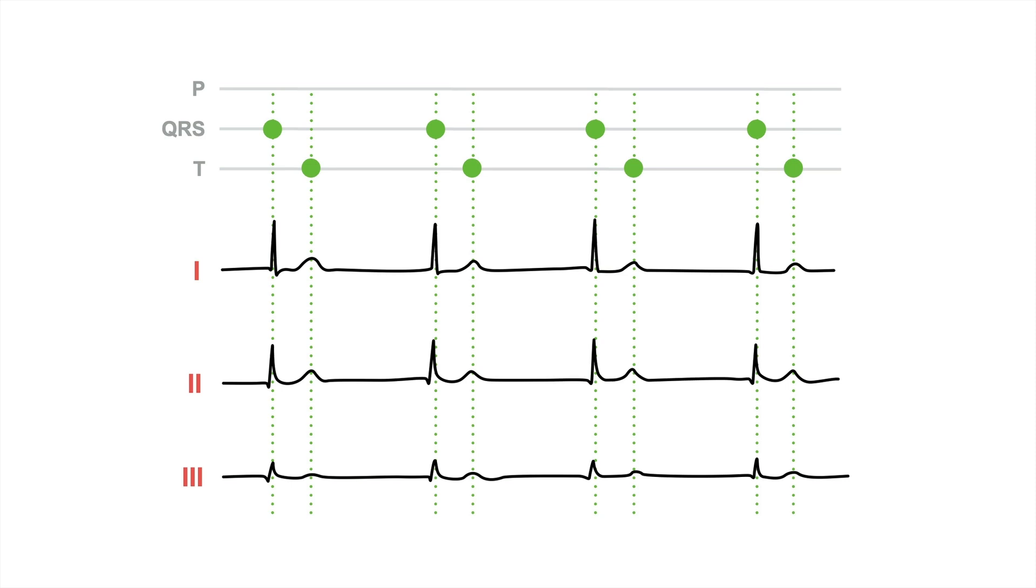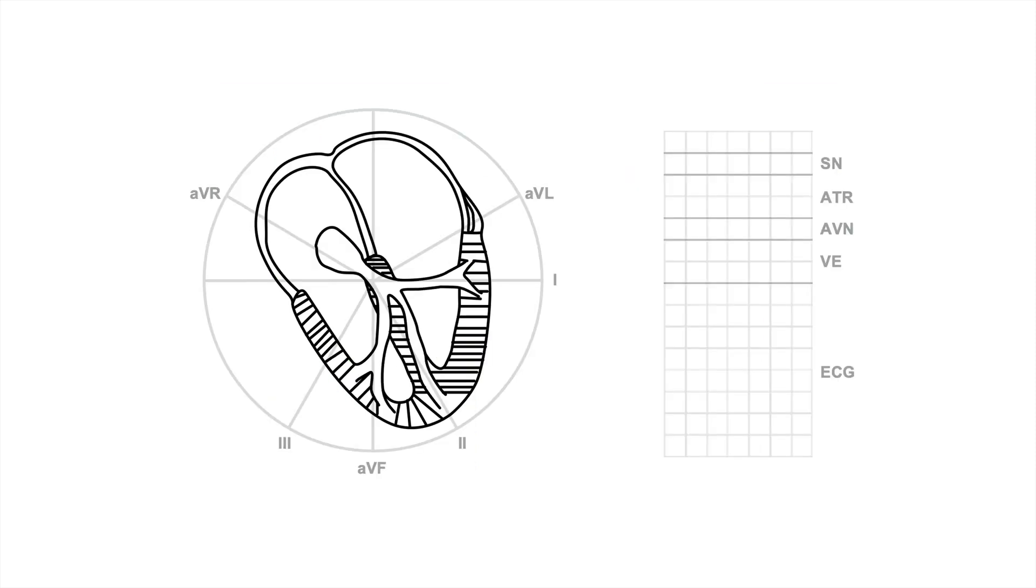This is just another form of a junctional rhythm. Let's have a look at the ladder diagram. Similar to the previous case, the impulse is generated in the AV junction and then travels up to the atria and down to the ventricles simultaneously. Let's check it out. So this is what happens. Since the atria and the ventricles are depolarized simultaneously, the P wave gets hidden within the QRS complex.